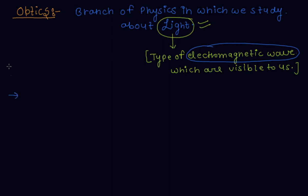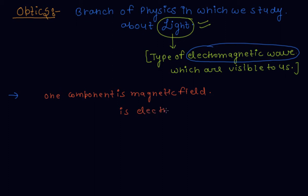So basically, electromagnetic wave is a type of wave in which one component is magnetic field and the other component is electric field. You know about magnetic field and electric field. So basically, electromagnetic wave is a wave in which one component is magnetic field and the other component is electric field. Let's take an example of electromagnetic wave.